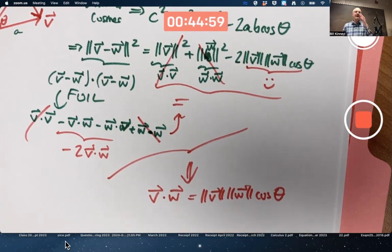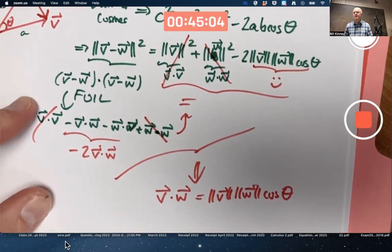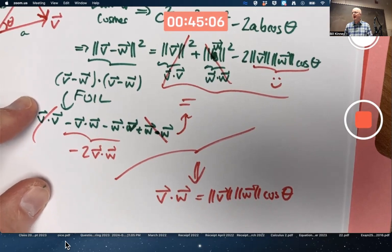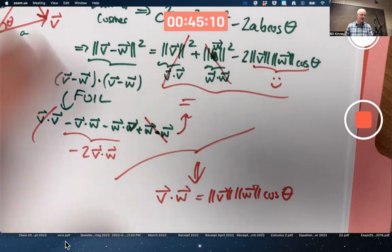But that just begs a question. Two questions. First of all, like, well, why can we foil here? Are distributive properties of dot products, we have to verify that. Maybe a more significant question is why is the law of cosines working?